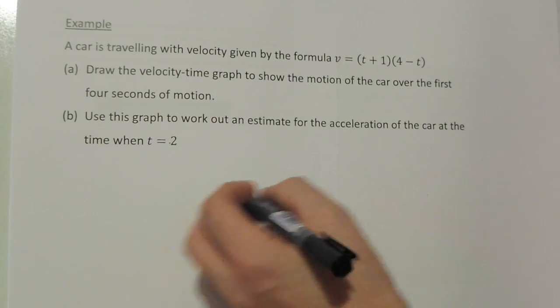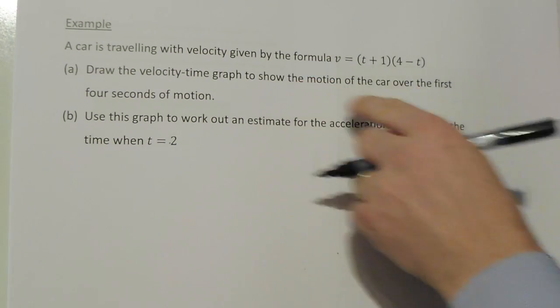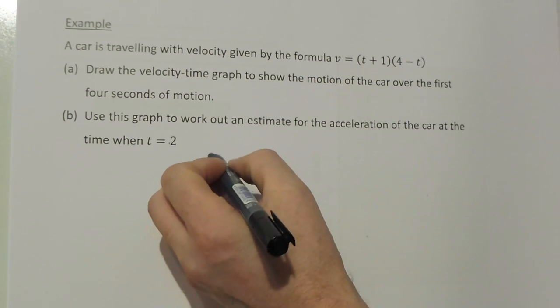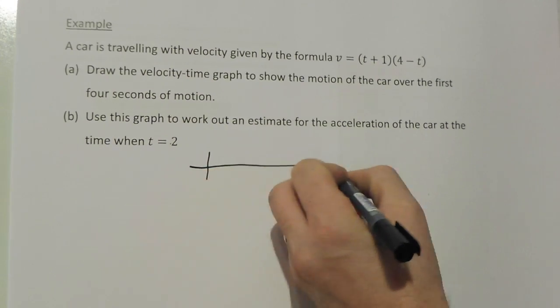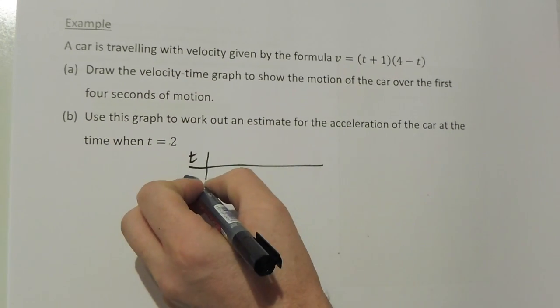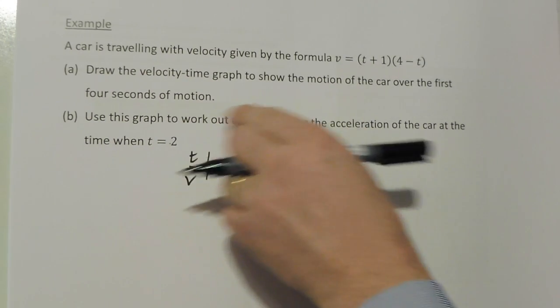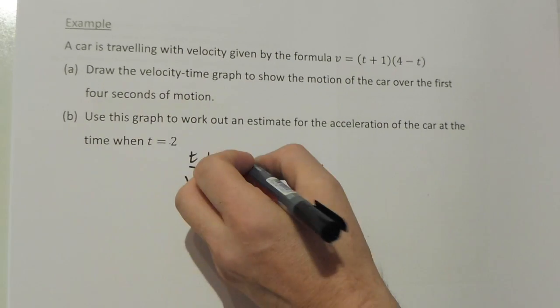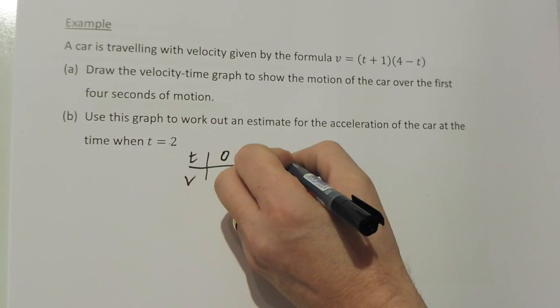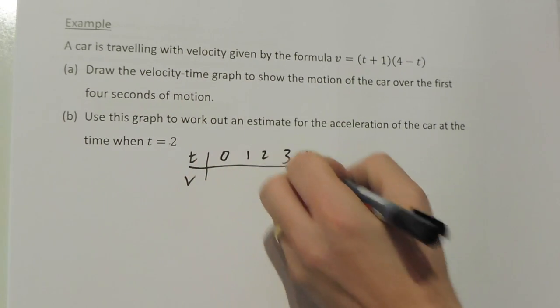To draw this graph, we first have to work out some coordinates. So if we draw a set of axes with time and velocity, where the time we're looking at over the first four seconds: 0, 1, 2, 3, and 4.